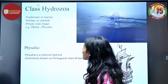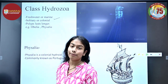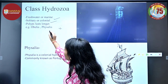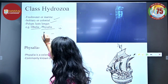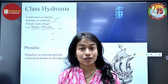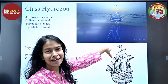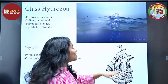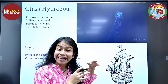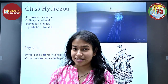Class Hydrozoa: they are mainly freshwater or marine, and may be solitary or colonial, with the polyp stage predominant. Examples are Obelia and Physalia. Physalia is a colonial hydroid also called the Portuguese man-of-war because when it floats in the sea, it looks like an 18th-century Portuguese ship sailing at full sail.